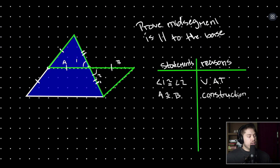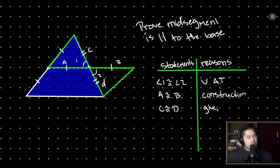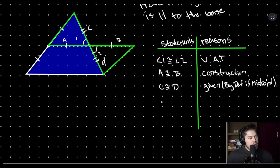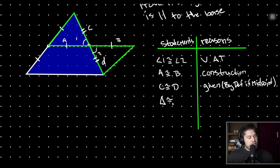This side length is also congruent to this side length — that comes from our given, by the definition of midpoint, since the mid-segment connects the midpoints of the two legs. So side c is congruent to side d by definition of midpoint. Now we can say that these two triangles are congruent by the side-angle-side postulate.